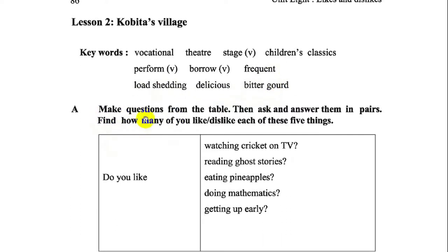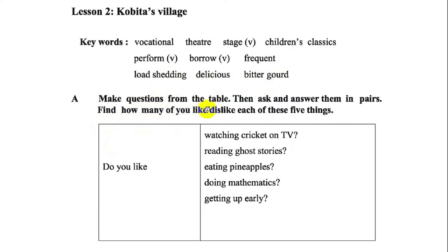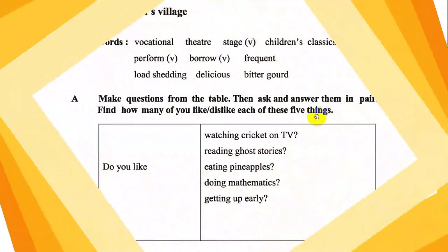Make questions from the table, then ask and answer them in pairs. Find how many of you like or dislike each of these five things.